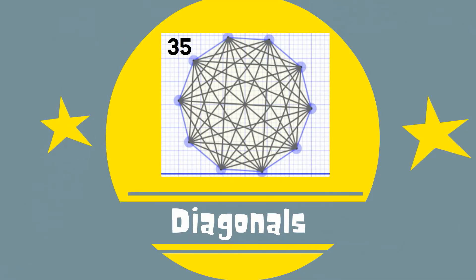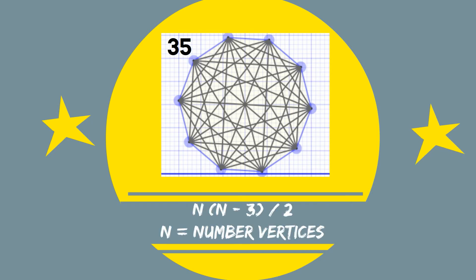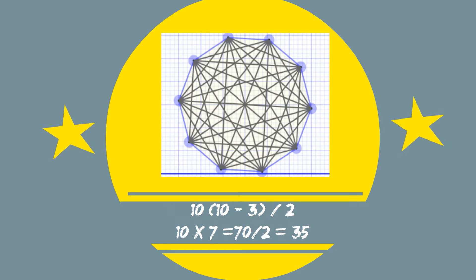A decagon has 35 diagonals. You can find the number of diagonals by using n times n minus 3 divided by 2, and n is the number of vertices. Here's the math.